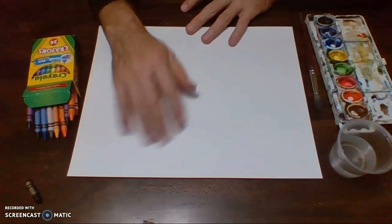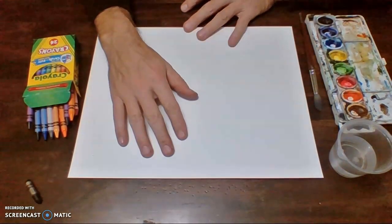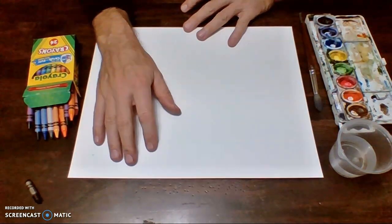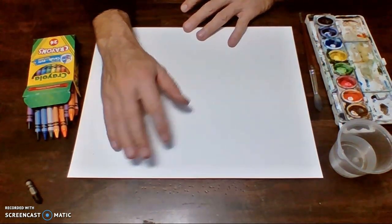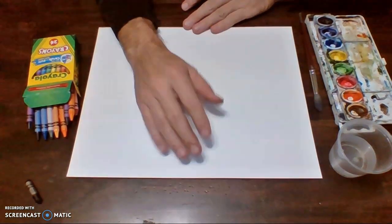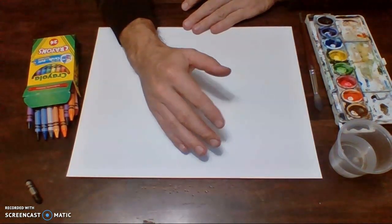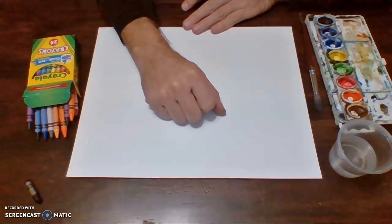All right boys and girls, now that we've learned how to do a little bit of form, it's time for us to learn how to do value, basically shading. Now if you've never done value, if you don't know what shading is, it's basically how something looks lighter or darker. It's talking about shadows as well.